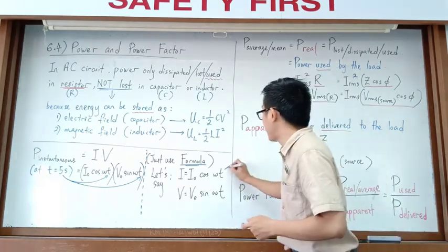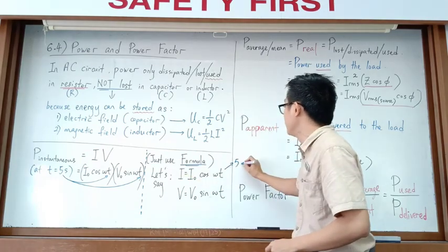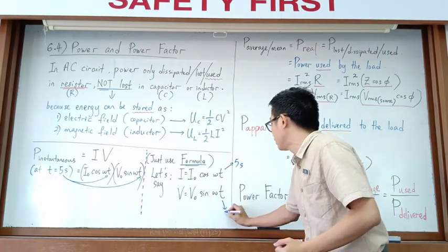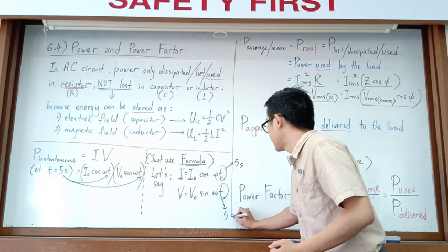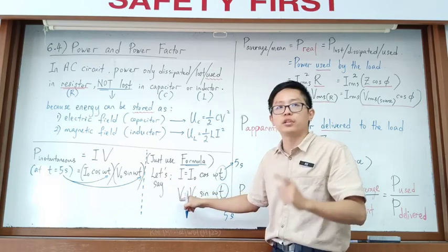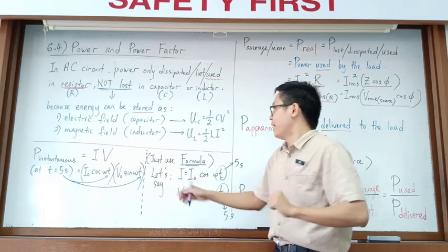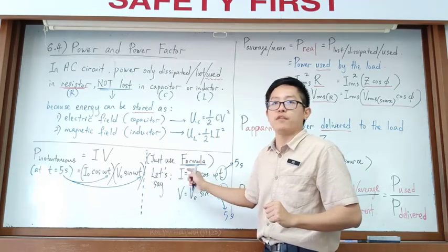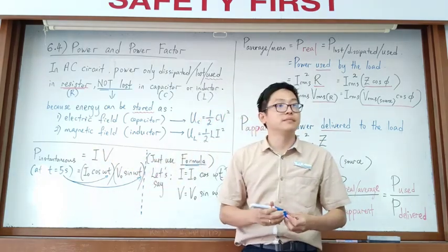Substitute the time — for example, five seconds — into both the current and voltage equations. Calculate the current at that time and the voltage at that time, then multiply both values together to get the instantaneous power.